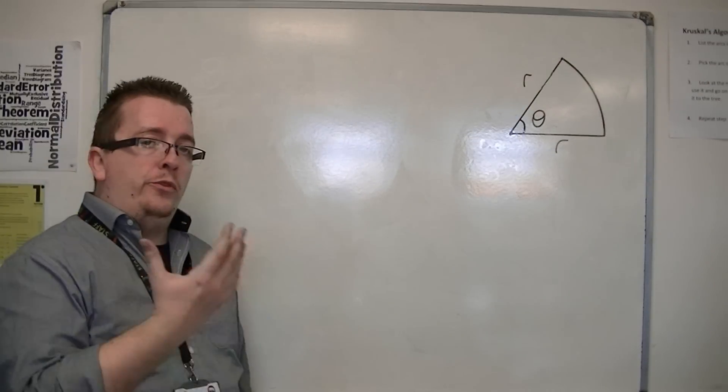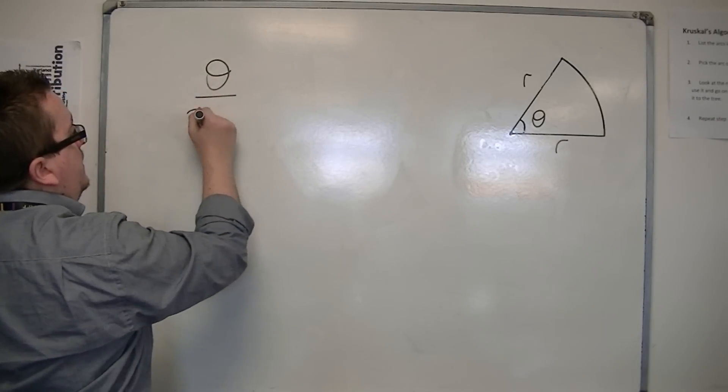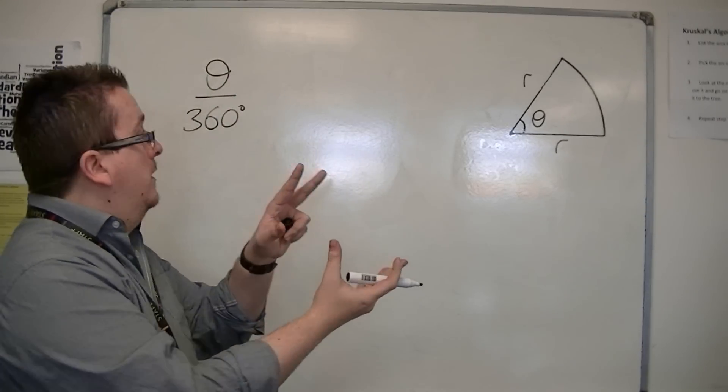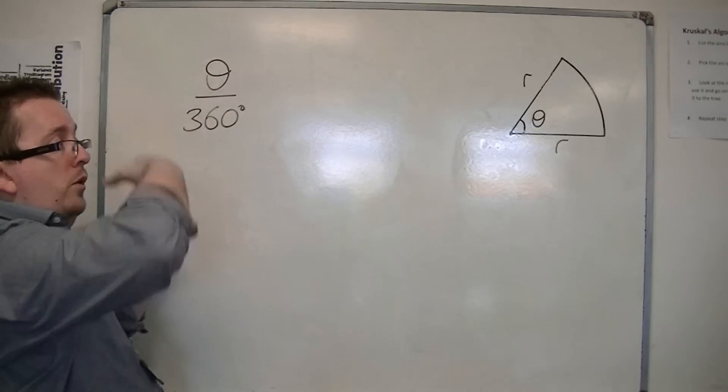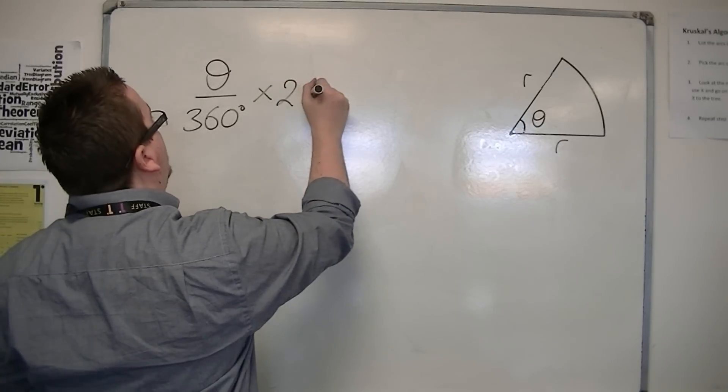then if I was working in degrees, it would be a similar story as before. I would have the theta out of 360 degrees, because I want a portion of the whole circumference of the circle. And the circumference of the circle is 2 pi r.